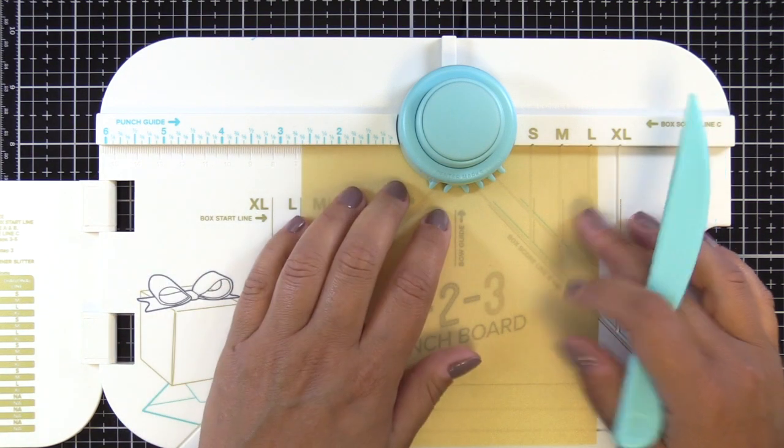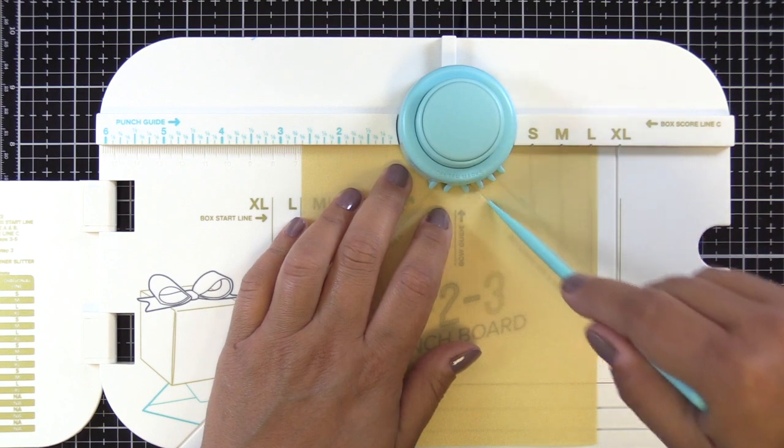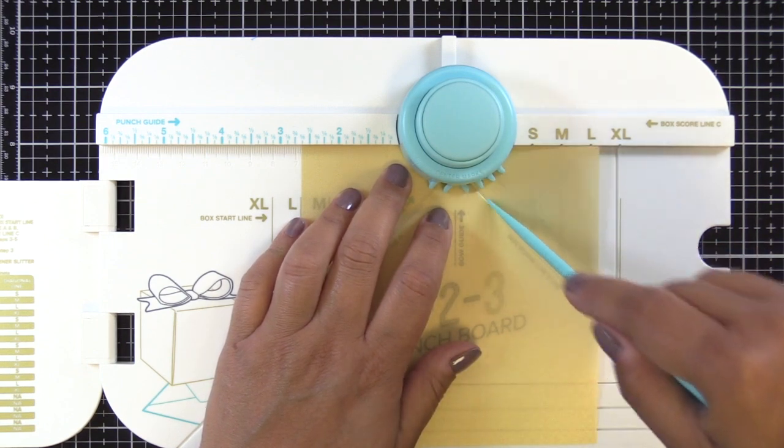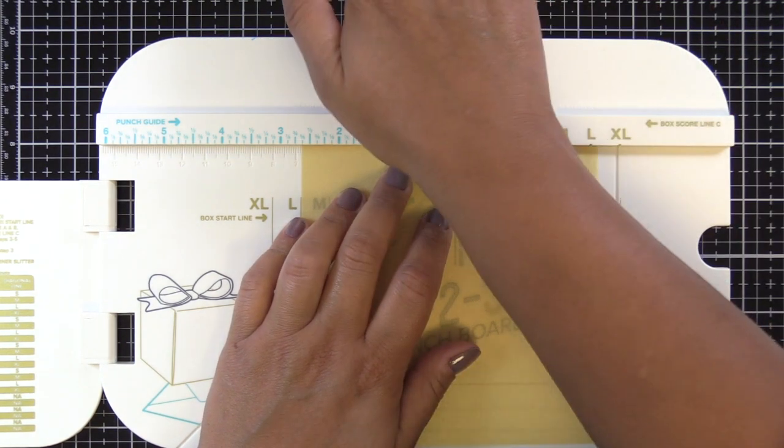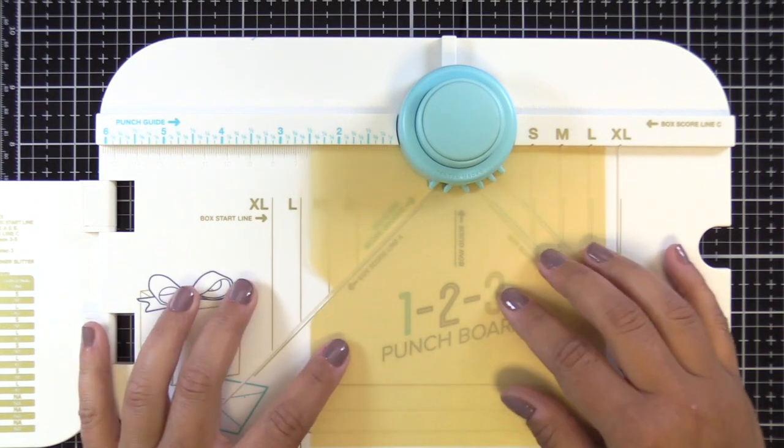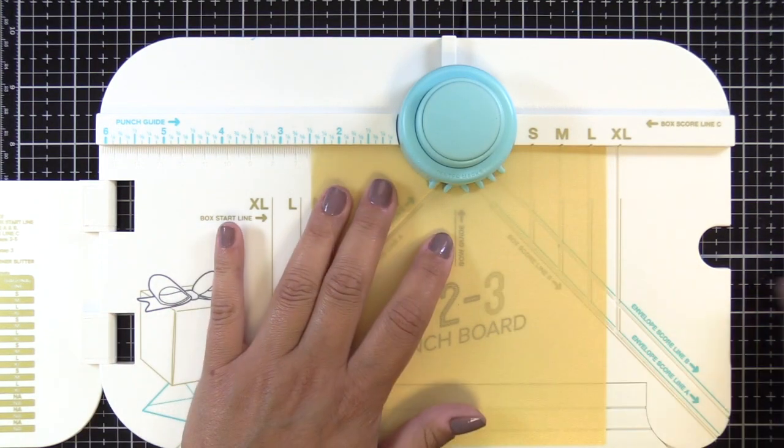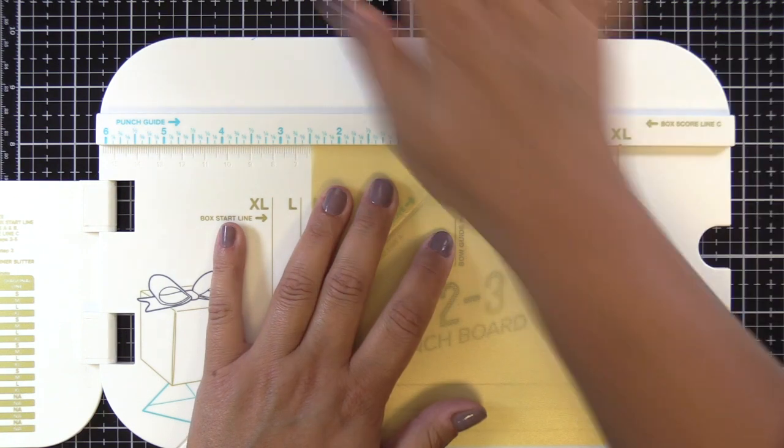So it's a handy app you can get it on your phone and just punch in the dimensions that you need and it will let you know what size cardstock you need and what your score line is. So for this I need to cut the cardstock to five and a quarter and score at two and five eighths.